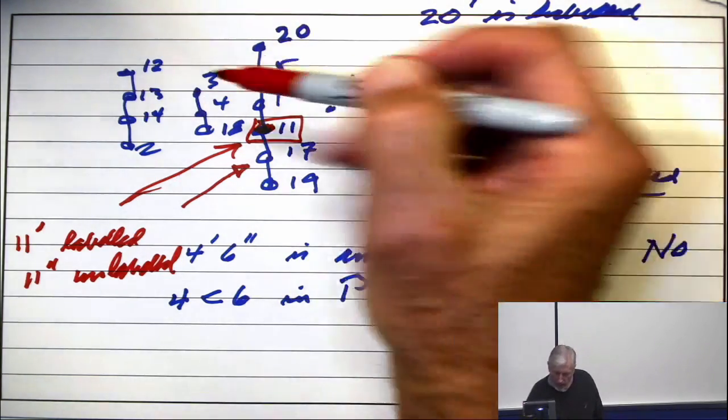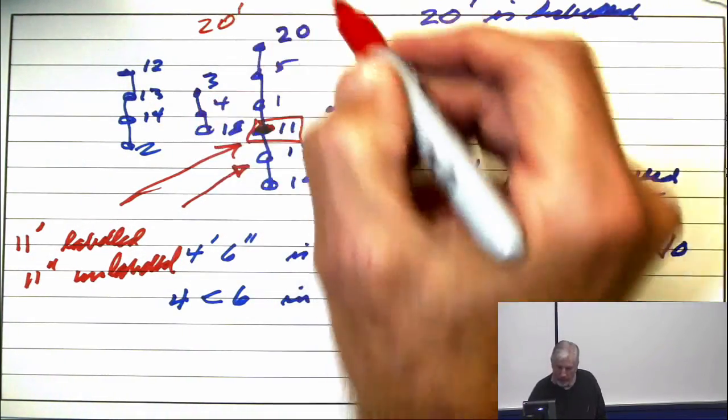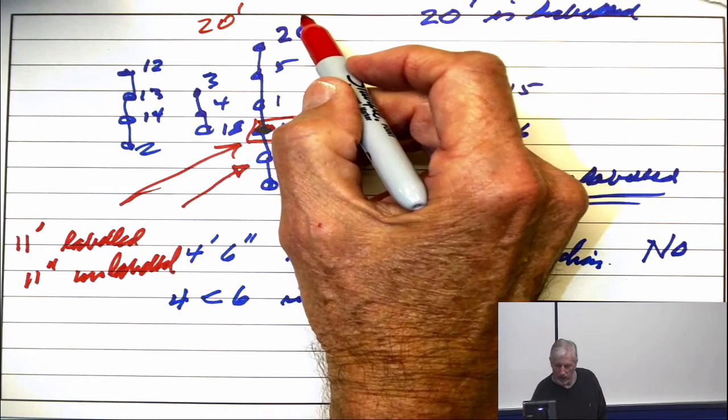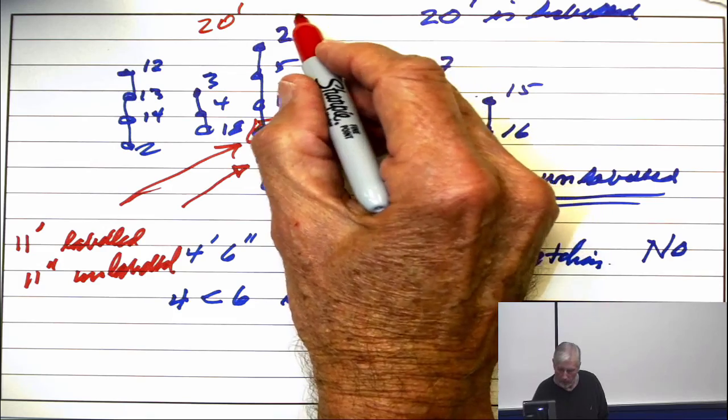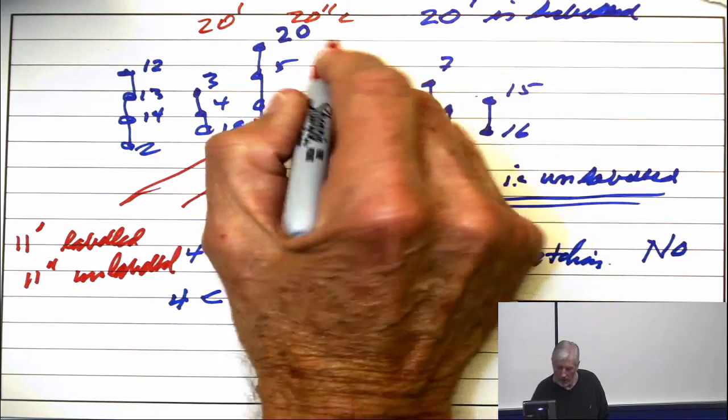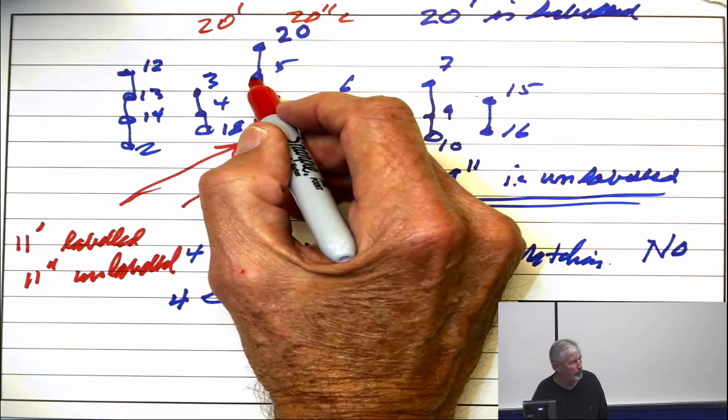All right, here I got 20 prime is labeled. I'm done unless 20 double prime is also labeled. So this is labeled. All right, now if that's labeled, then I drop down to this guy.